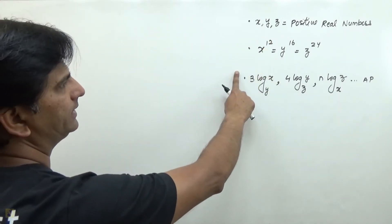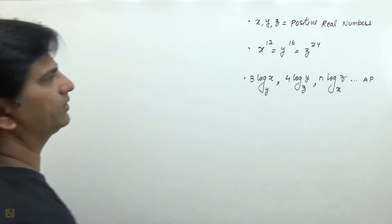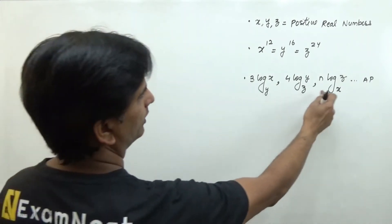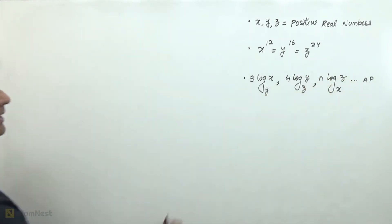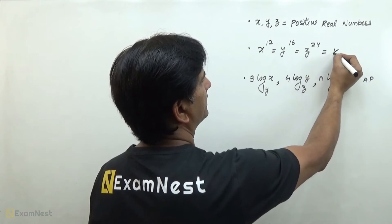Given that x, y, z are positive real numbers, x raised to the power 12, y raised to the power 16, and z raised to the power 24 are equal, and the three quantities are in arithmetic progression. So,